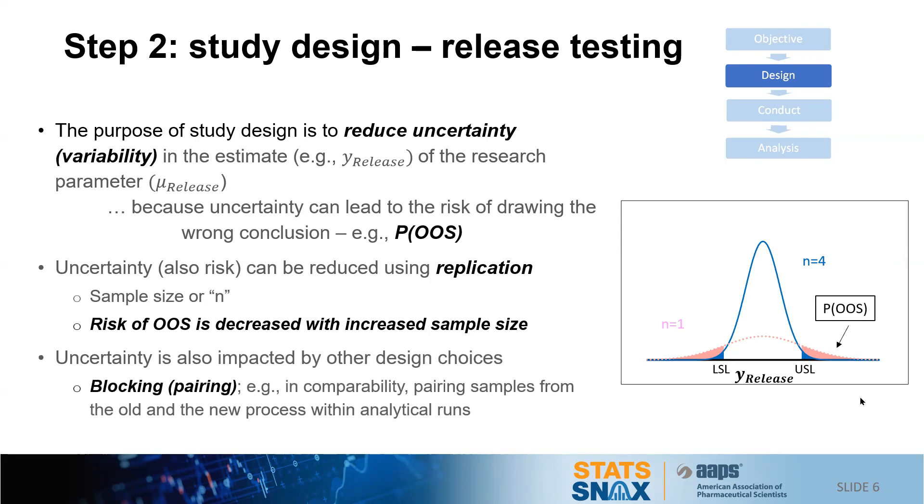Uncertainty is also impacted by other design considerations. I won't go into much detail about this except to mention blocking or pairing. For instance, in comparability we sometimes think to pair samples from an old and new process within the same analytical runs to reduce the variability by getting rid of the run-to-run variability of the assay.